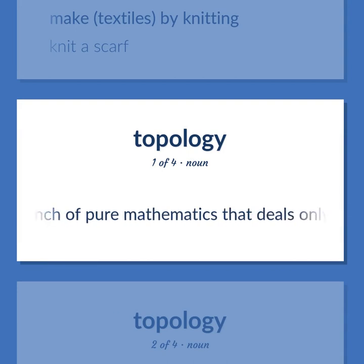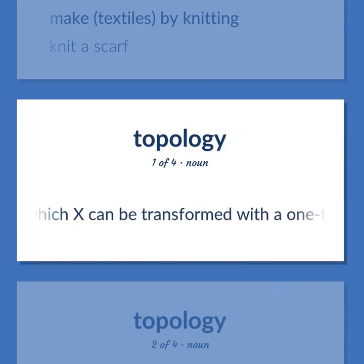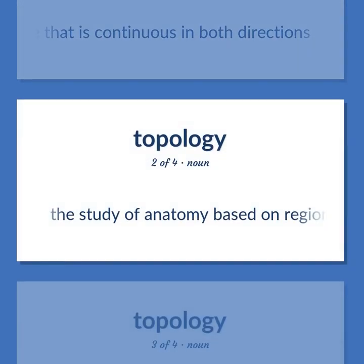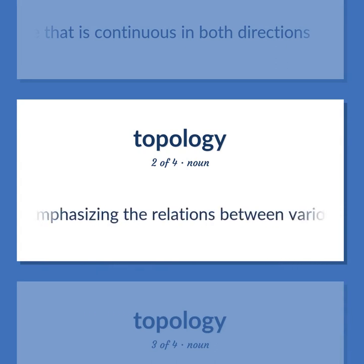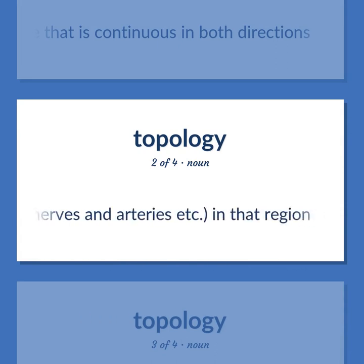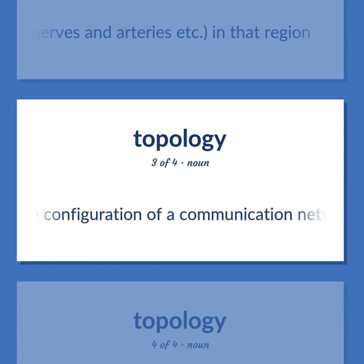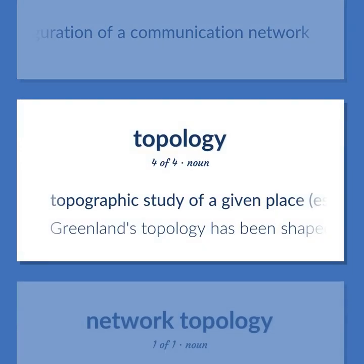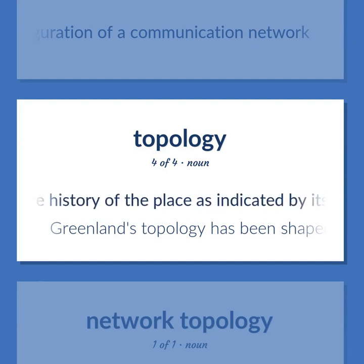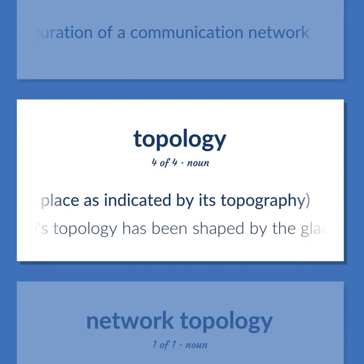TOPOLOGY: The branch of pure mathematics that deals only with the properties of a figure x that hold for every figure into which x can be transformed with a one-to-one correspondence that is continuous in both directions. The study of anatomy based on regions or divisions of the body, emphasizing the relations between various structures — muscles, nerves, and arteries — in that region. The configuration of a communication network. Topographic study of a given place, especially the history of the place as indicated by its topography — 'Greenland's topology has been shaped by the glaciers of the ice age.'